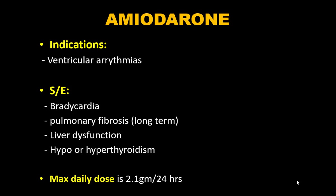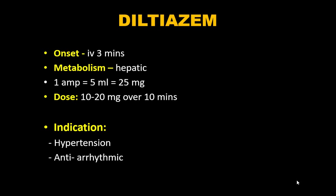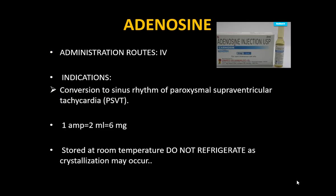Diltiazem is a non-dihydropyridine calcium channel blocker that inhibits extracellular calcium influx across myocardial and vascular smooth muscle cells. Onset IV is within 3 minutes; metabolism is hepatic. One ampoule: 5 mL = 25 mg. Dose: 10–20 mg over 10 minutes. Indications: rate control of arrhythmias and hypertension — diltiazem is the preferred choice for rate control.